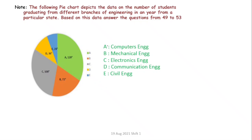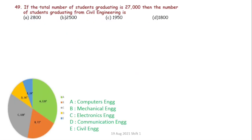Next, pie chart-based questions. The pie chart shows departments: Computer Engineering, Mechanical Engineering, Electrical, Electronics, Communication Engineering, and Civil. These are the six engineering departments. The total number of students graduating is 27,000. One complete circle is 360 degrees, so 360 degrees represents 27,000 students.